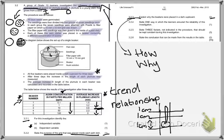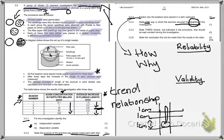For 3.2.4, it says state one way in which learners ensured the reliability. This is actually a tricky question if you don't read it properly. A lot of people see the word reliability and give a set answer. I'm going to remind you what reliability is, so we know the difference between reliability and validity.